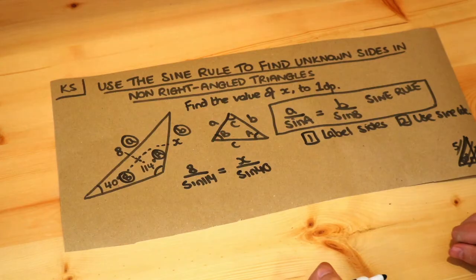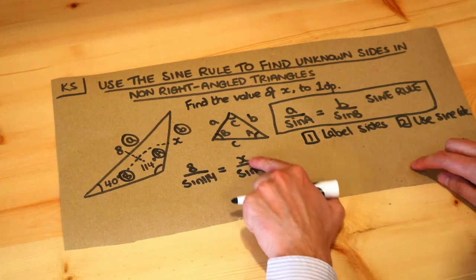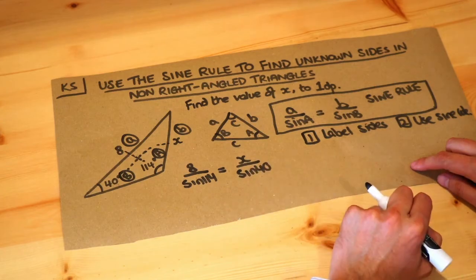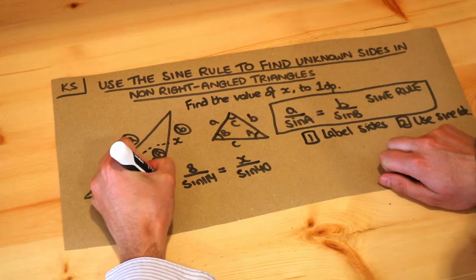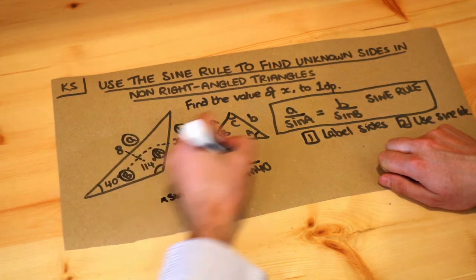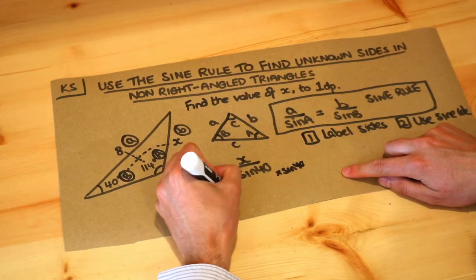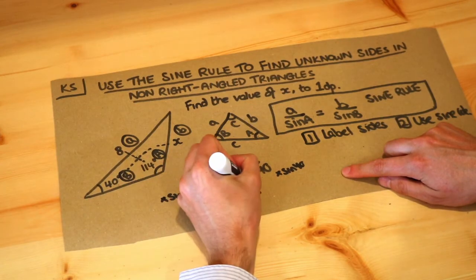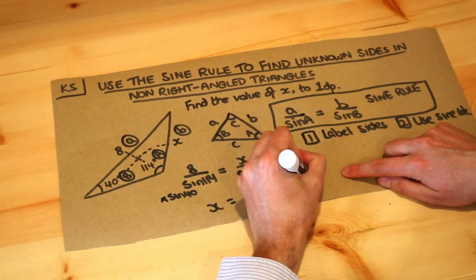Now it just becomes a solving an equation type problem. We want to get x on its own. X is being divided by sine of 40, so we're going to multiply both sides by sine 40. That means x is going to be 8 over sine 114 multiplied by sine of 40.